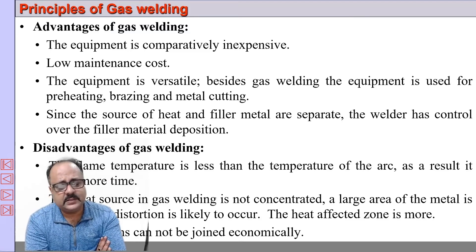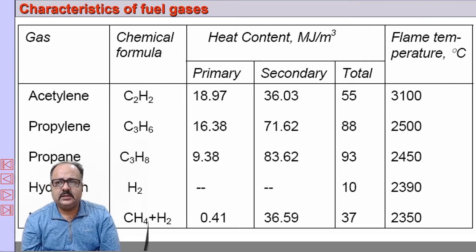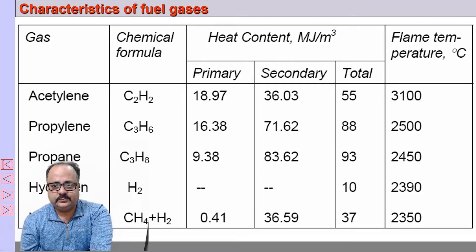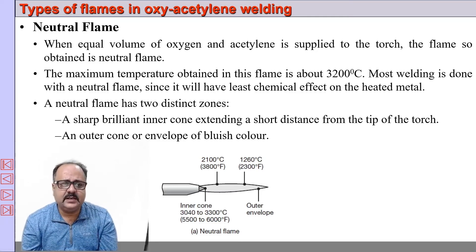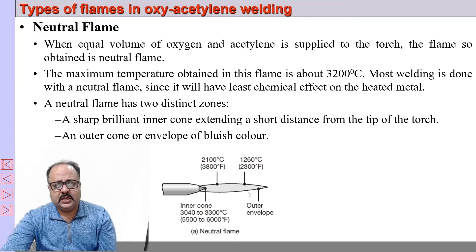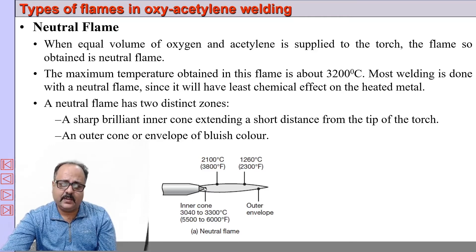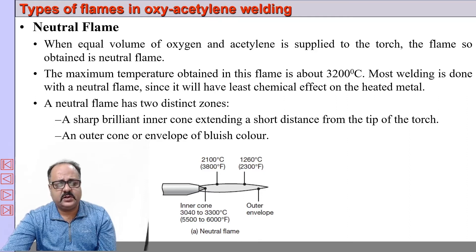There is a chart showing the flame temperature and heat content for different welding gases. In a neutral flame, equal volumes of oxygen and acetylene are used, giving a maximum temperature of around 3200 degrees centigrade. The neutral flame has two distinct zones: the outer envelope at around 1250 degrees centigrade is used for preheating the metal, while the inner cone at around 3200–3300 degrees centigrade is used for melting. The inner cone is bright and the outer envelope is bluish in color.